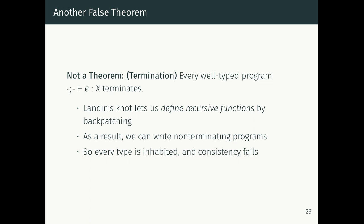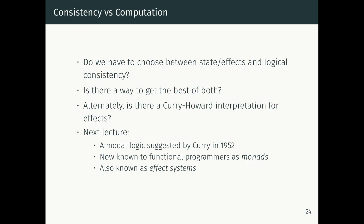So do we have to choose between being able to change the world and logical consistency? Is there a Curry–Howard interpretation for effects? Of course there is — this is only lecture seven, so it's a rhetorical question. There is a way to retain logical consistency and still have state. We'll look at a modal logic suggested by Curry in 1952. If you're a Haskell programmer you know this idea as a monad; you may also have heard of effect systems. All three of these things are actually exactly the same thing, and we're going to start looking at it.